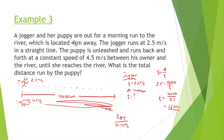Now we have another bit of information. We know the puppy is running for 1,600 seconds. Knowing that, speed equals distance over time for the puppy. Speed of the puppy is 4.5, and we know it's running for 1,600 seconds. We can figure out the distance by doing 1,600 times 4.5, and we get 7,200 meters.